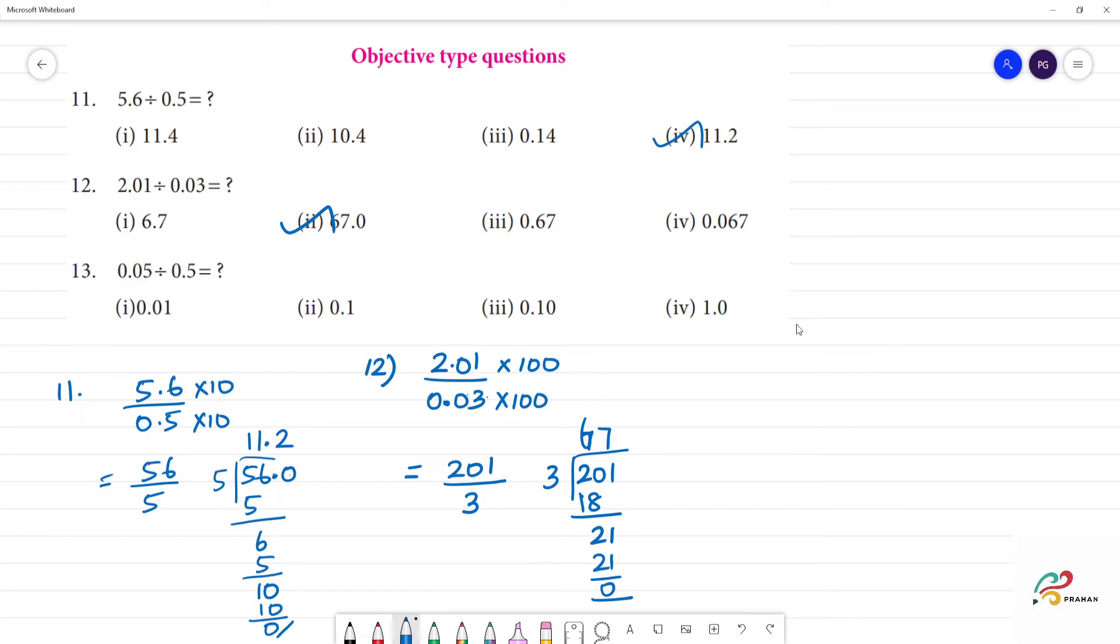Next 13th one. 0.05 divided by 0.5. Now, denominator is 1 digit - multiply by 10, multiply by 10. Point moves right, then here is point. 0.5 divided by 5. Clear?